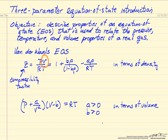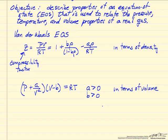So I've written this in terms now of density. So this is volume per mole, but this is density, so the inverse of volume per mole. The other way of writing the equation, and we have two parameters a and b here, is to write it in terms of volume.